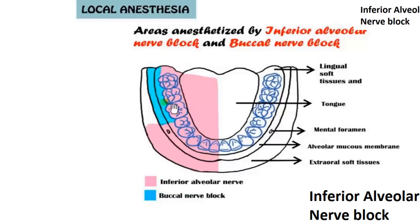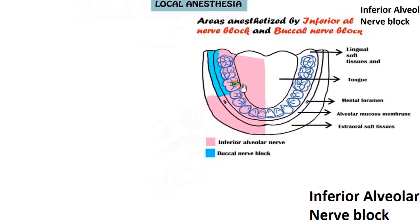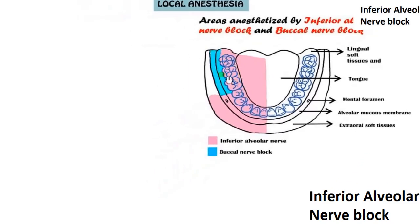Whenever we have to extract any of the molar teeth or perform any procedure on them, we have to give both the inferior alveolar nerve block and the buccal nerve block.